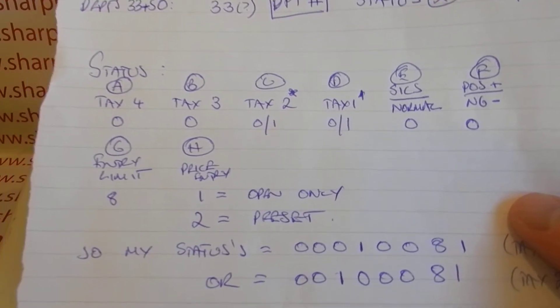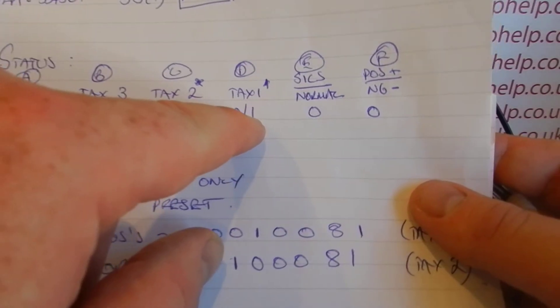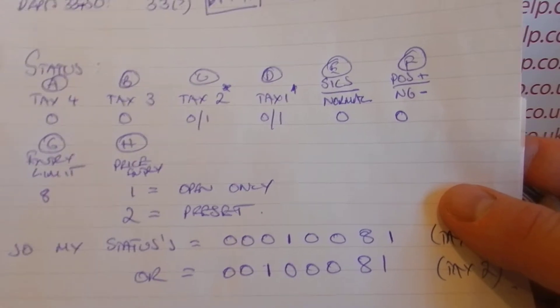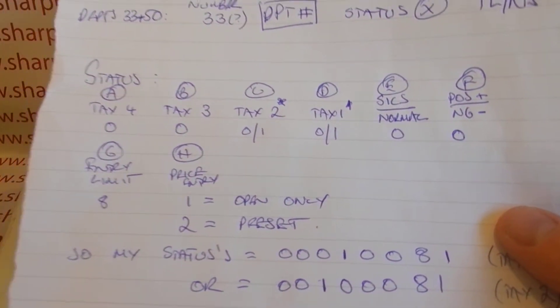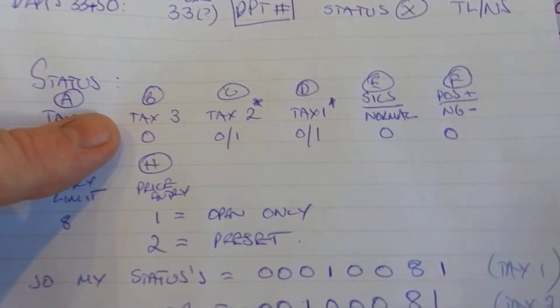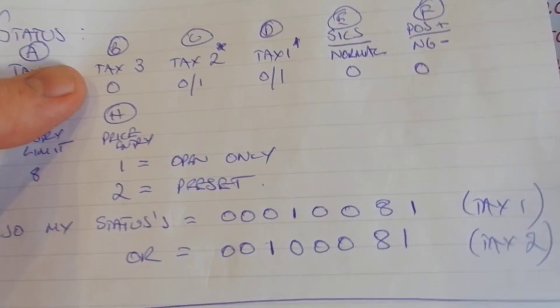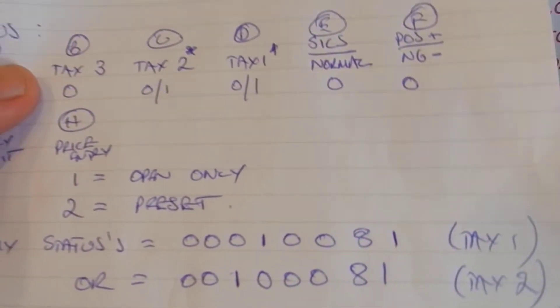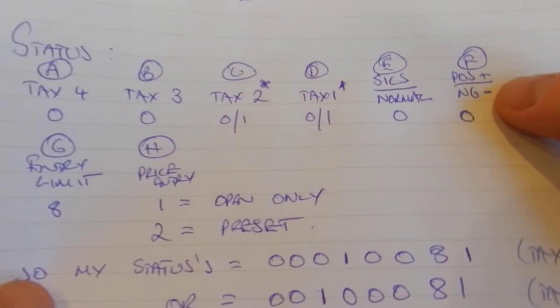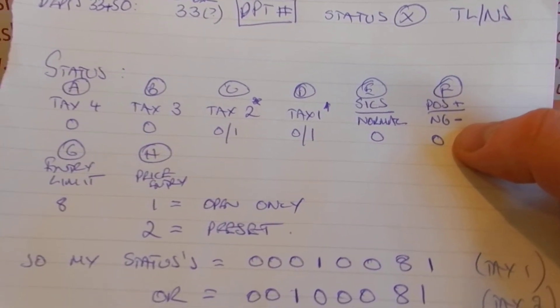Tax rate 2: if tax rate 2 applies, I type in 1 there, or 0 if it doesn't. Then the same again with tax rate 1. So the first four numbers you enter have to do with the tax rates, and they're all going to be 0s or 1s. In fact, you can have three 0s and one 1, the 1 telling it which tax rate to apply. Your fifth digit you enter is whether your item is a single item cash sale or normal. 99.9% of people are just going to have normal, so that's going to be 0. Positive or negative is the next digit. Obviously, if it's a normal sales department, you can have it set to be positive, which is 0.